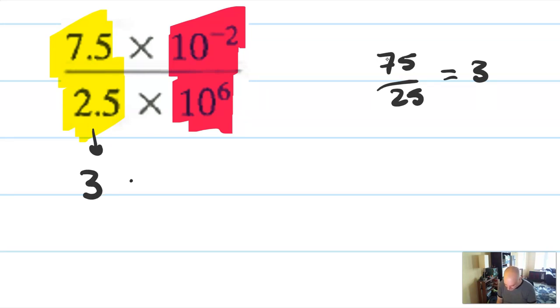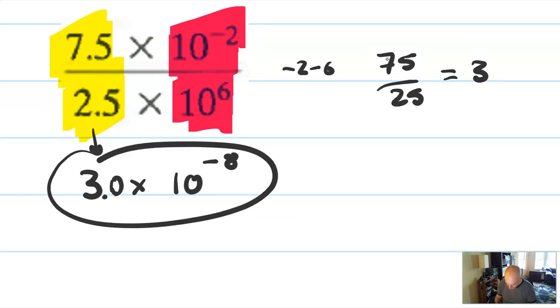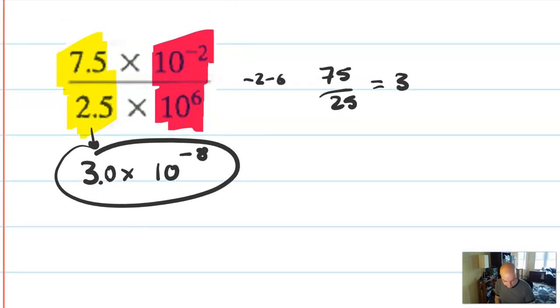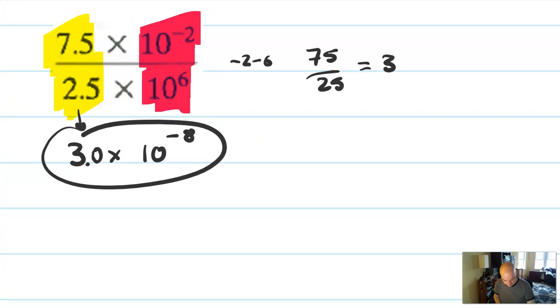So since the decimal is in the same place, this is also 3. Negative 2 minus 6 is negative 8. Negative 2 minus 6. And I'm doing subtraction. So here I have 3 times 10 to the negative 8. This is 3.0. You don't have to write the 0.0 unless you want to. Technically, I think you should only write the 0.0 if that relates to the precision of your measurements. So don't get excited because I told you to write the 0. Follow significant figures when there are measurements and error.